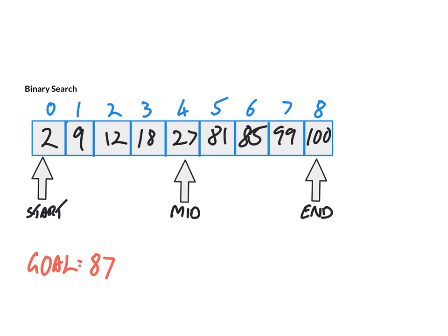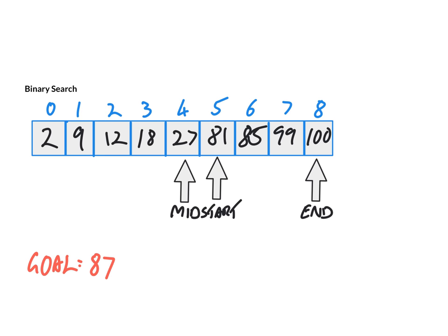This time, we have set our goal as 87. You'll notice that 87 isn't actually in the list, so let's follow the algorithm through. We calculate our mid position, which would still be 4 to start off with. Our goal state, 87, is higher than 27, so we move our start position up. Our new midpoint is 5 plus 8 equals 13, divided by 2 equals 6.5, which gives us position 6. We compare: 87 is bigger than 85, so we need to move our start position again. Our start position is 7, and 7 plus 8 is 15, divided by 2 is 7.5, so we go to position 7.